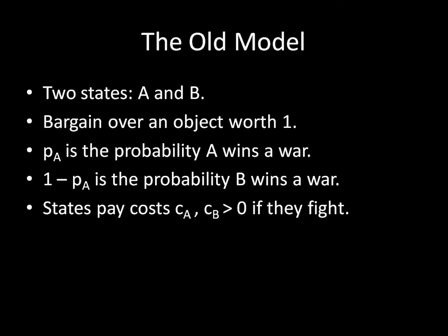Remember that the old model looks like this. We have two states, A and B. They're bargaining over an object worth 1, or 100%. P-A is the probability that A wins the war; 1-P-A is the probability that B wins the war. So P-A is what A expects to receive if A fights, and 1-P-A is what B expects to receive if the states fight. And if they fight, fighting is costlier than bargaining, so states are paying positive costs C-A and C-B, which are greater than zero.